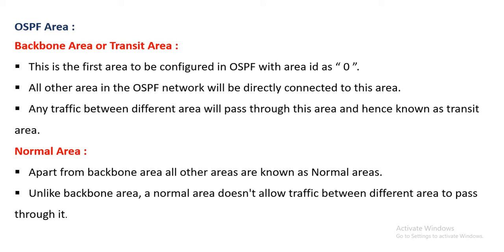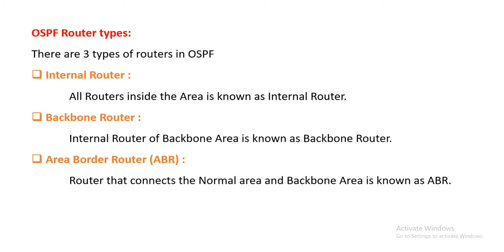OSPF uses areas. The backbone area, also called the transit area, is the first area configured in OSPF with area ID 0. All other areas in the OSPF network are directly connected to this backbone area, and any traffic between areas passes through it. Apart from the backbone area, all other areas are normal areas and do not pass traffic between other areas. The types of routers in OSPF are: internal router, backbone router, area border router (ABR), and autonomous system border router (ASBR).